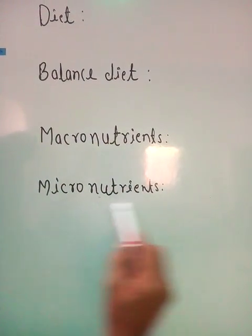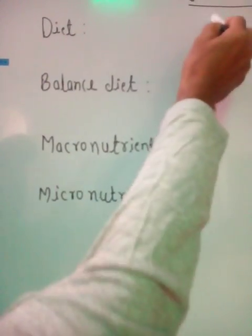First is diet. Basically, diet is the food we eat - very simple. The food we eat is known as diet. But balanced diet - the diet which contains all nutrients, that means macro as well as micro, in correct proportions for the efficient working of the body - that is known as balanced diet.